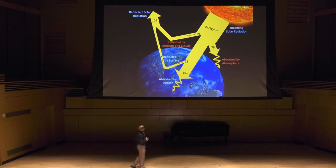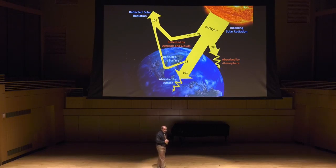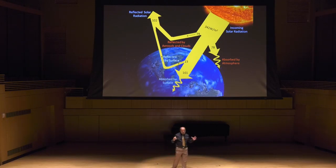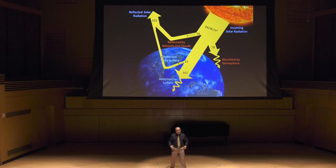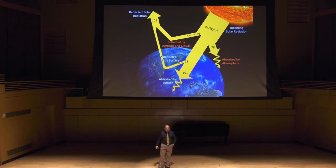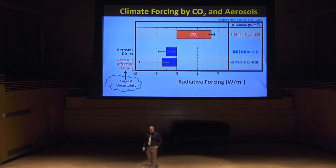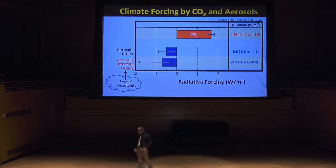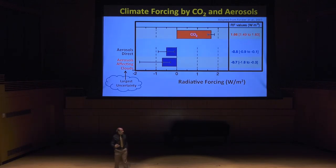I'll focus on these two topics in red: the light reflected back to space and the energy of the sun that gets absorbed by our atmosphere. That light is reflected by particles in the atmosphere and by clouds.